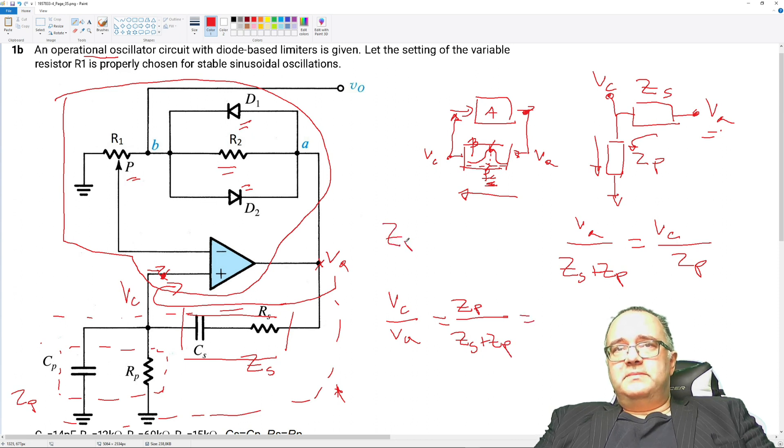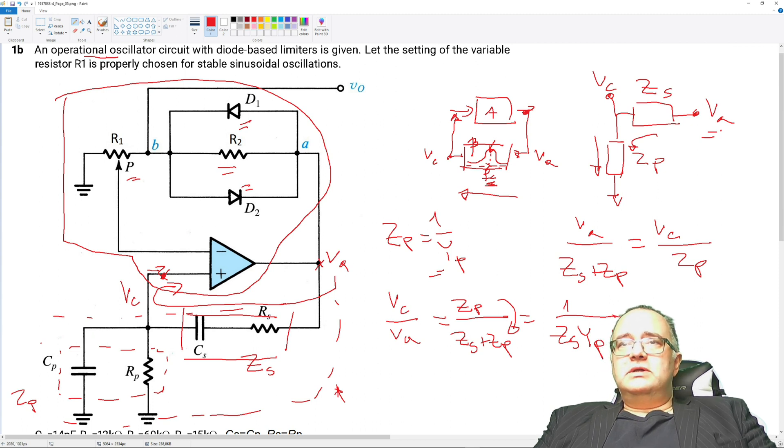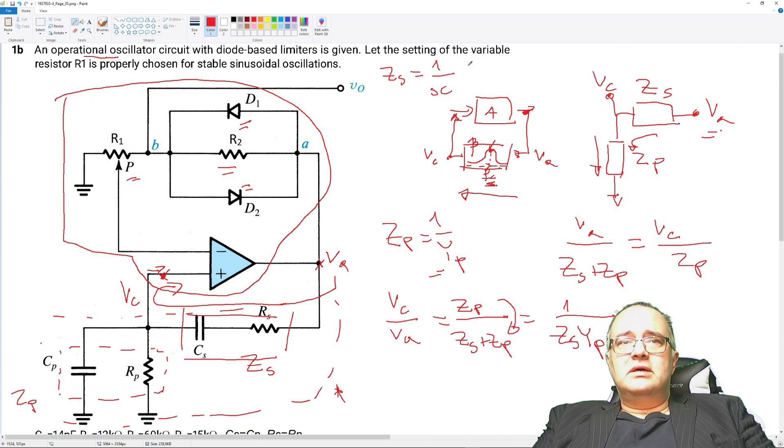Or in other words, if I let Zp equal to 1 over Yp, this will be 1 over Yp plus Zs. I have simply that Cs is equal to Cp equal simply to C and Rs equal to Rp equal simply to R.